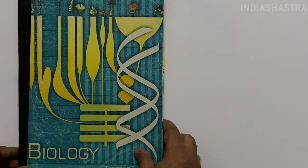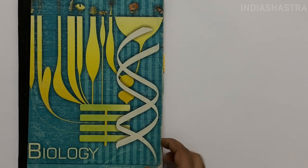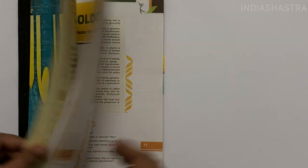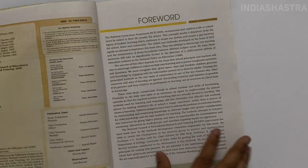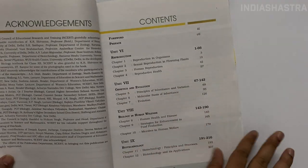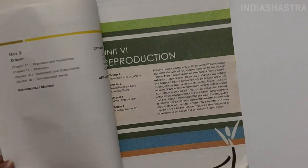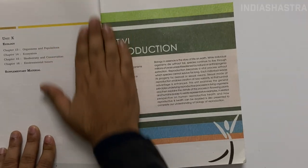Environment and Ecology carries approximately 50 marks in the prelims examination, and the cut-off is mostly around 100 marks. So Environment and Ecology is very important.